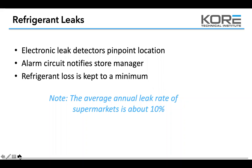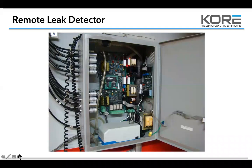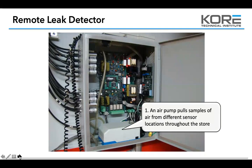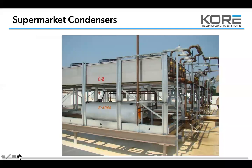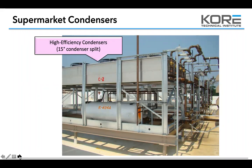The average annual leak rate of supermarkets is about 10%, which is quite a bit. Your average supermarket holds anywhere from 600 to 1,100 pounds of refrigerant per rack. This is an infrared leak detection system — an IRLDS. You've got your air pump that pumps air through to take a sample, and your microprocessor that takes the air sample and checks for parts per million of refrigerant. In this application the receiver is actually on the roof with the condenser — you might see that from time to time. Up to 1,500-pound capacity — that's a big boy.